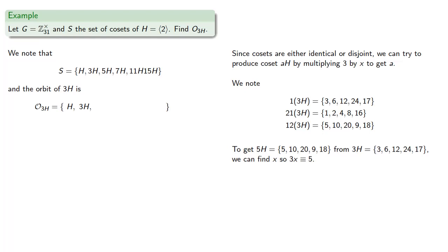Similarly, if I want to get 5H from 3H, I want to find X so that 3 multiplied by X is going to give you 5. And again, because these are group elements, we have a solution, X equal to 12. And so 12 times 3H is going to give us 5H. And since we can get to 5H from 3H, then 5H will also be in the orbit.